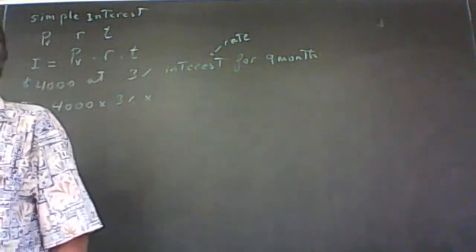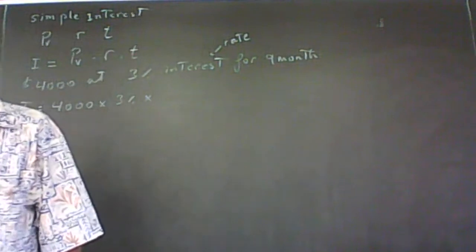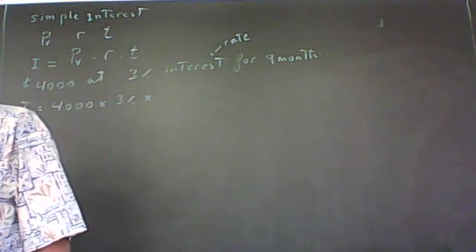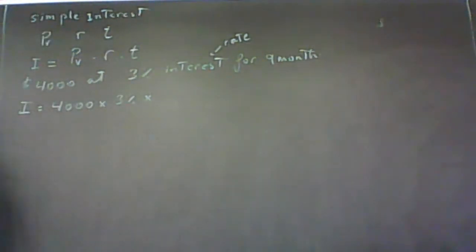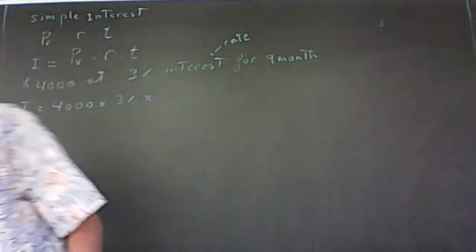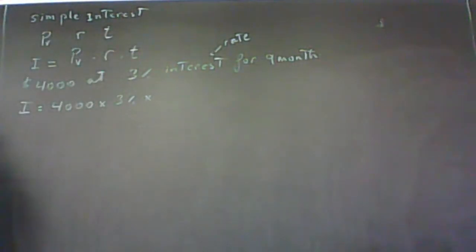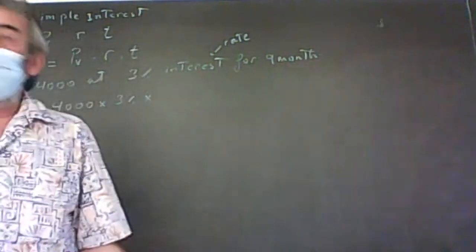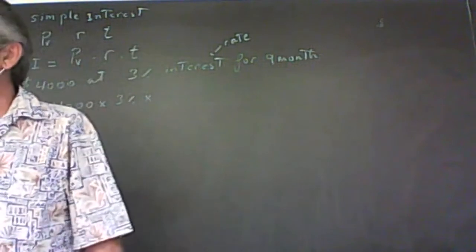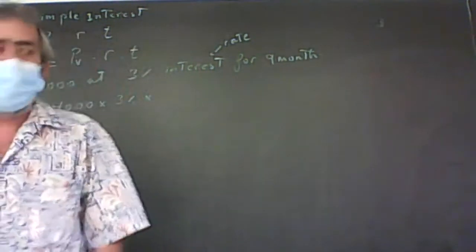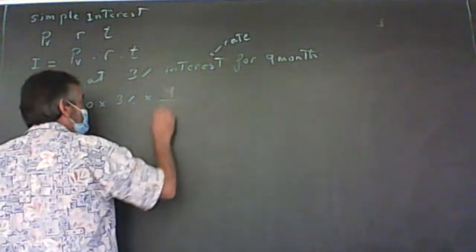How do I convert nine months to years? Divide by 12. If given days, divide by 365; if weeks, divide by 52. I prefer fractions to always get the exact value. Now, 3% needs to be changed to decimal before we can use it in the calculation. So that's 4,000 times 0.03 times 9/12.